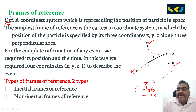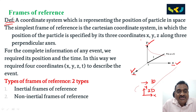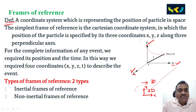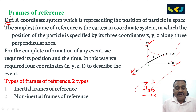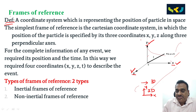Along x is called one-dimensional, x and y is two-dimensional, and x, y, z is three-dimensional. A coordinate system representing the position of a particle in three-dimensional space is called a frame of reference. The simplest frame of reference is the Cartesian coordinate system, in which the position of the particle is specified by its three coordinates x, y, z along three perpendicular axes.